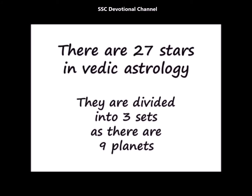These stars are divided into three sets — three into nine equals 27. Note that each planet will get three stars, because every planet has to be associated with a star or nakshatra. Each planet is going to get three stars, and stars are again divided into three groups.